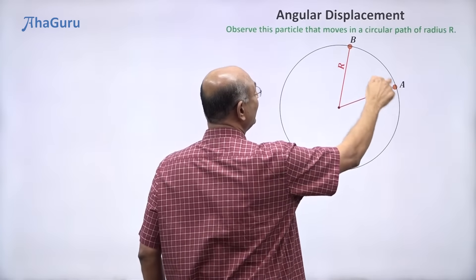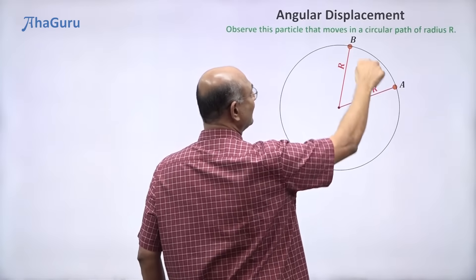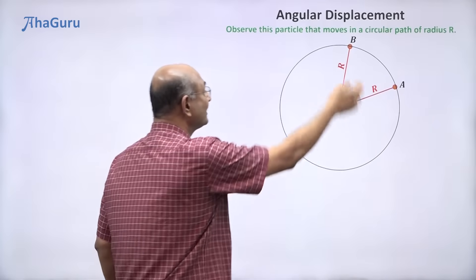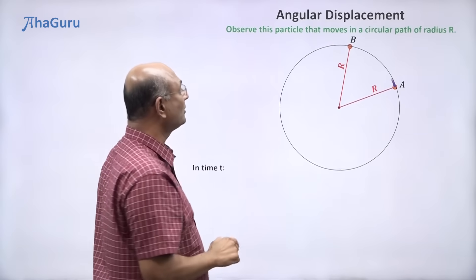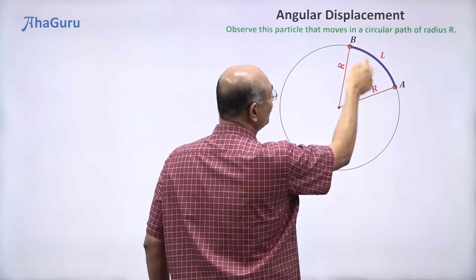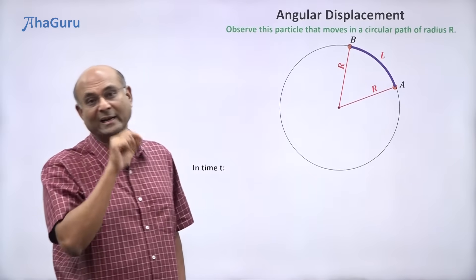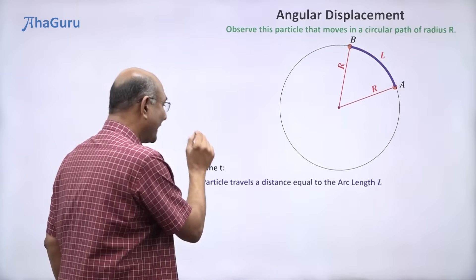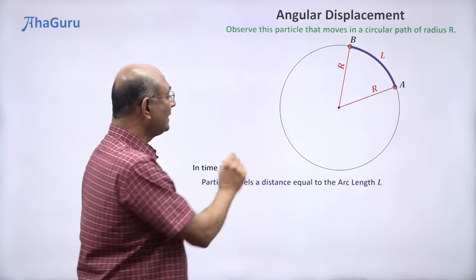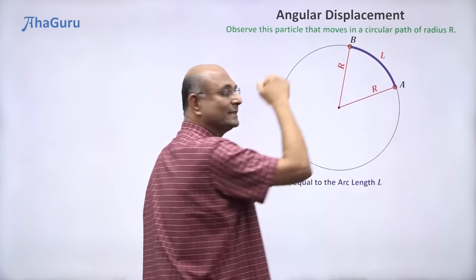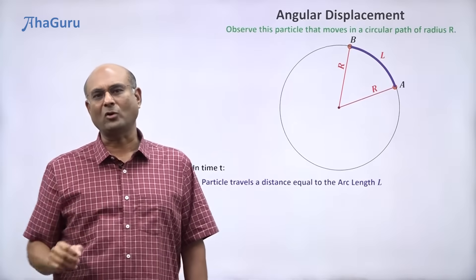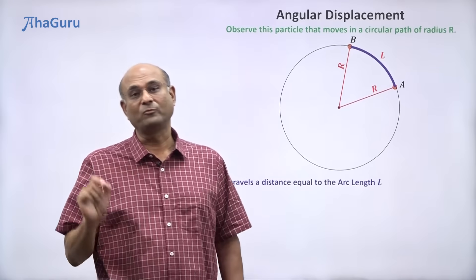That would mean the chord a to b. Straight line. Is that how it moved? No. It moved on the circumference. So if you want to talk about the distance it has moved, we need the arc length l. So the particle travels a distance equal to this arc length l. So that is one way to talk about how the particle has moved from a to b.